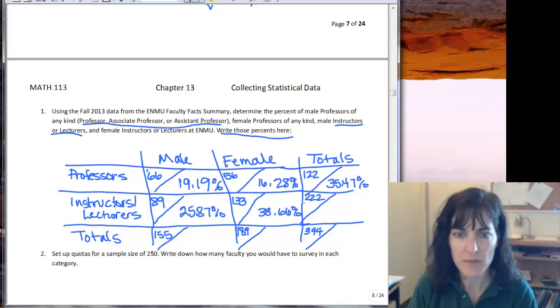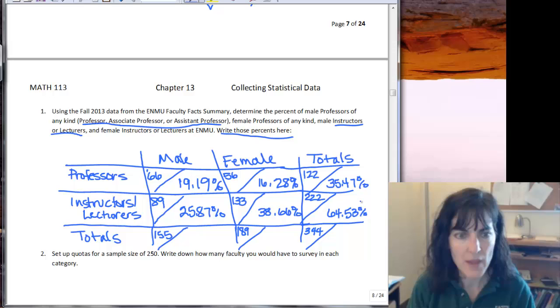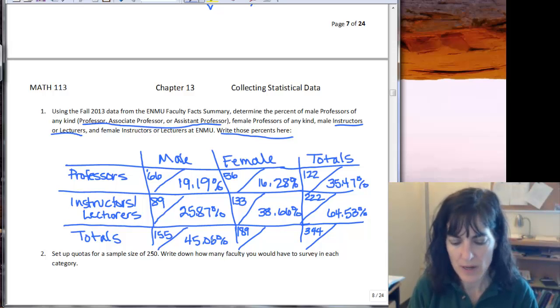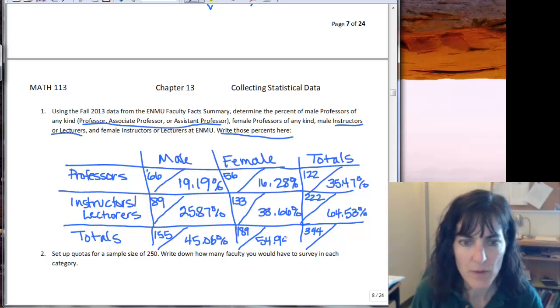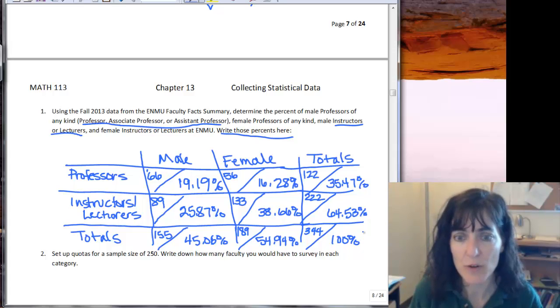38.66, then 222 divided by 344 is 64.53, and then 155 divided by 344 is 45.06. 189 divided by 344, and then 344 divided by itself should be 100 percent.